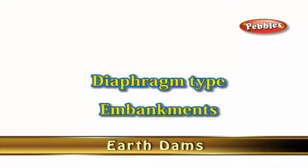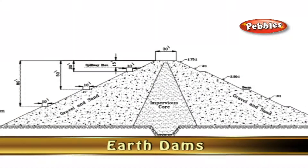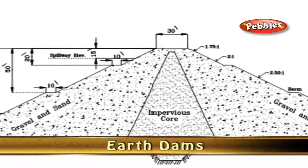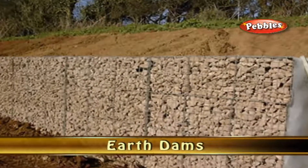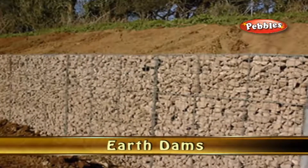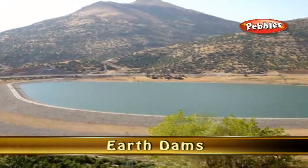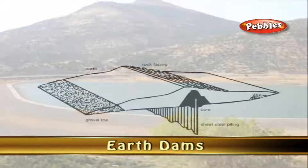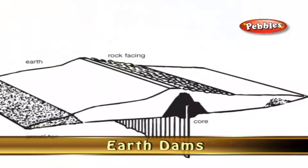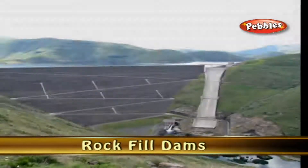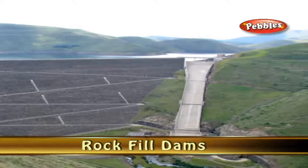Diaphragm type embankments: These have a thin impervious core surrounded by earth. The thin core is called the diaphragm and is usually made of impervious soils, concrete, steel, or timber. The diaphragm must be tied to the bedrock or to a very impervious foundation material.